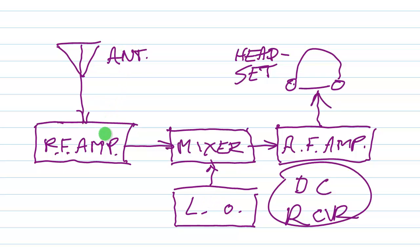The signal comes in from your antenna to a tunable radio frequency amplifier which serves as a pre-selector and an amplifier. You have a local oscillator which is tunable over the range of frequencies that you want to receive.